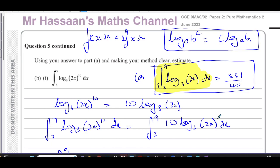That concludes this question from the June 2022 GCE A2 paper, Pure Mathematics P2 from the UK syllabus, 9MA002. Other questions from this paper and from the trapezium rule topic in P2 international A-level will be in the playlist. Subscribe to the channel and watch the video that explains how to find what you need. Thank you for watching and see you soon.